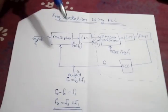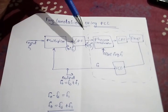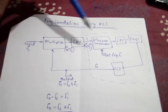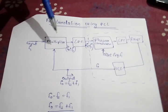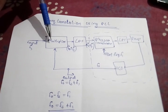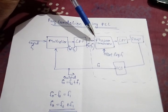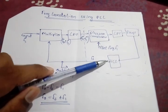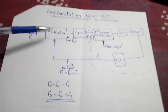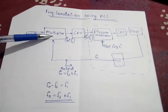Here in this diagram, in addition to Phase Lock Loop, we have added a low pass filter and a multiplier to the phase comparator — before the phase comparator. Also, the output of VCO is given to the multiplier or phase comparator.